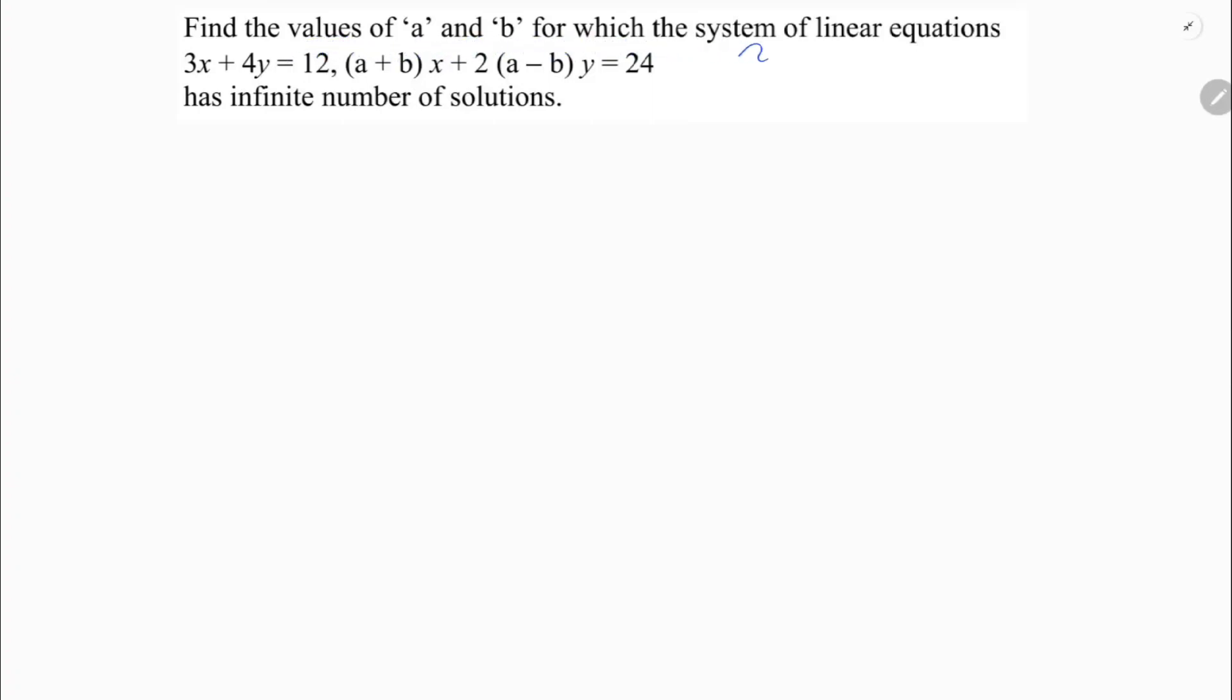Find the values of a and b for which the system of linear equations has infinite number of solutions. The two equations are 3x plus 4y equals 12, which I can write as 3x plus 4y minus 12 equals 0, and the next one is (a plus b)x plus 2(a minus b)y equals 24, so I can write (a plus b)x plus 2(a minus b)y minus 24 equals 0.